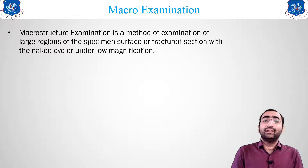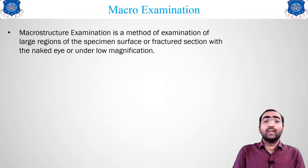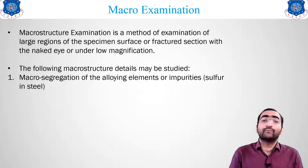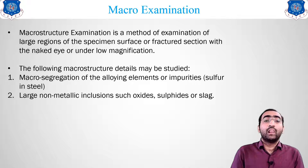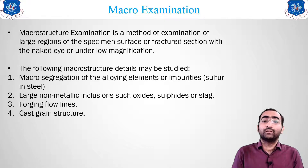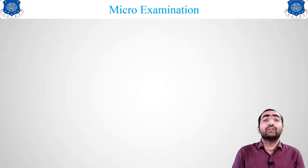Macro examination is the method of examining a large region of the specimen. We can study the fracture type — how the material has failed — under the naked eye or low magnification. With macro examination we can find: macro segregation of alloying elements, large non-metallic inclusions such as oxide, sulfide, and slag, forging flow lines, cast grain structure, and physical defects such as gas pockets and shrinkage cracks.